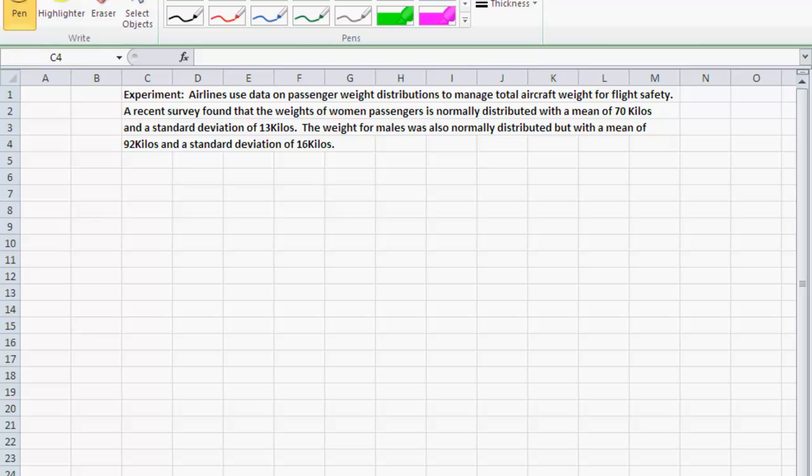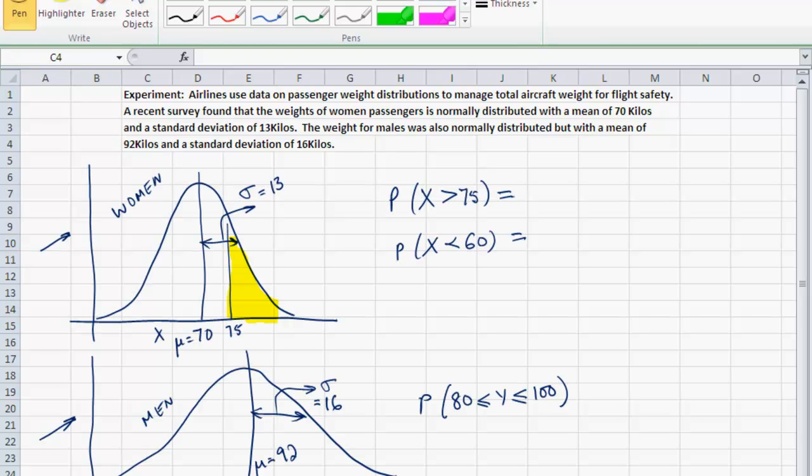Similarly, if a woman passenger walks up and I want to know what is the probability that this passenger will weigh less than 60 kilograms, then the area that I'm looking at is 60, and the area that I want to compute is this particular area. Once you conceptualize which area you need to compute, then you can have Excel do the calculation for you. The challenge here is to figure out which area to compute, to identify for the probability.